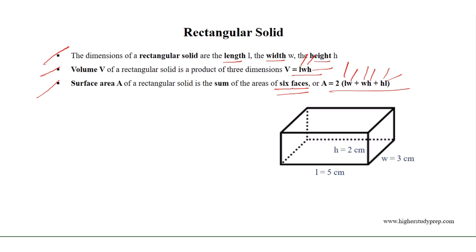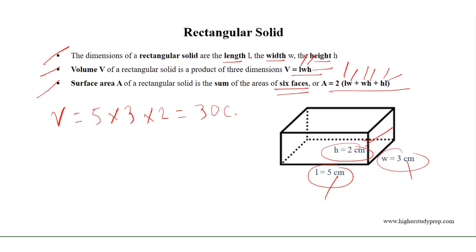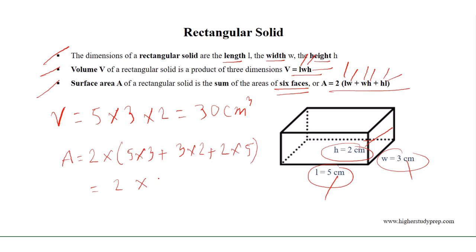Any rectangular surface has an area equal to the product of the length and width of that face. For this rectangular solid, the length, width, and height equal 5, 3, and 2 centimeters respectively. Therefore, the volume of this rectangular solid equals 5 times 3 times 2, which results in 30 cubic centimeters. And the surface area equals 2 times (5×3 + 3×2 + 2×5), which results in 2 times 31 equals 62 square centimeters.